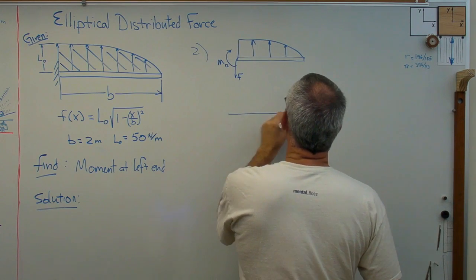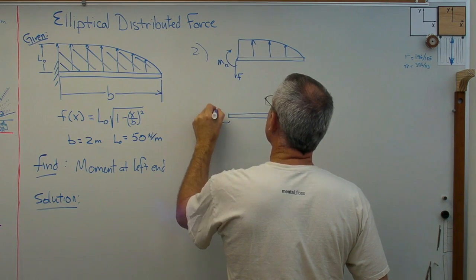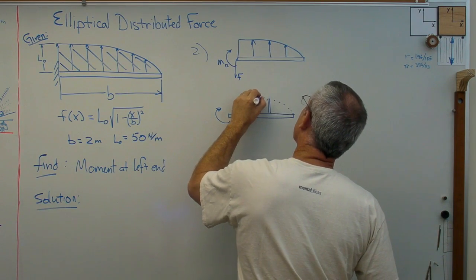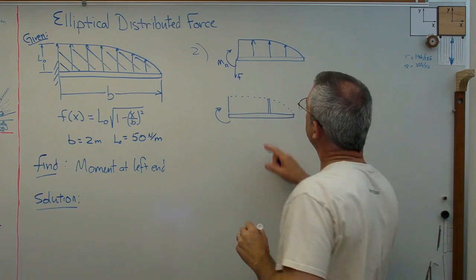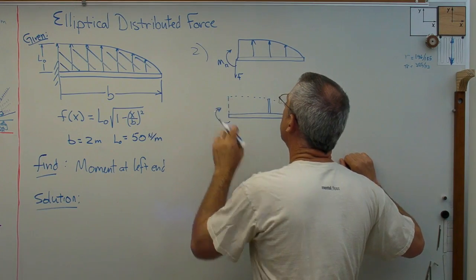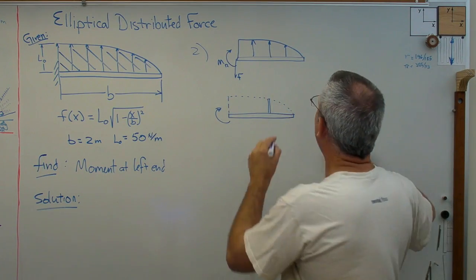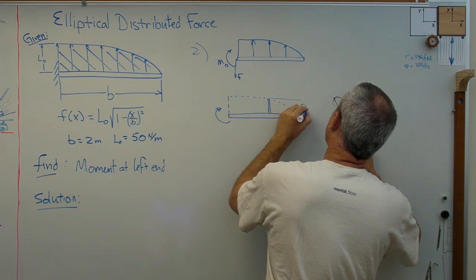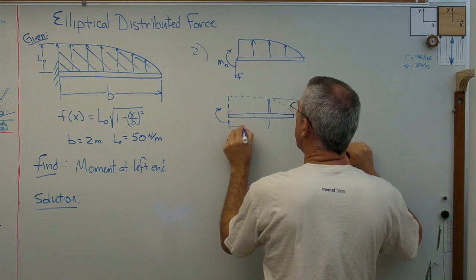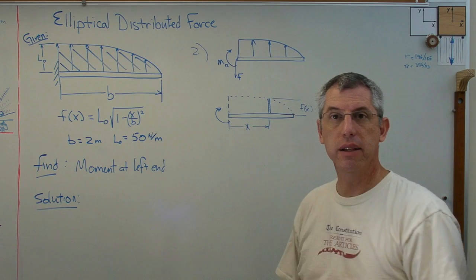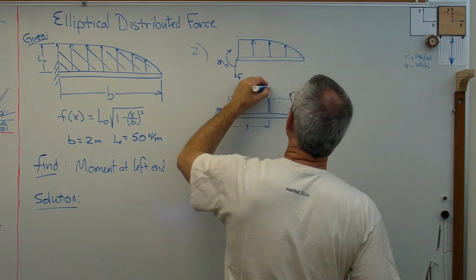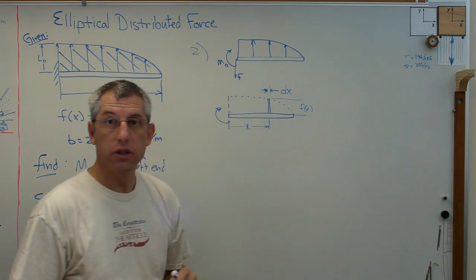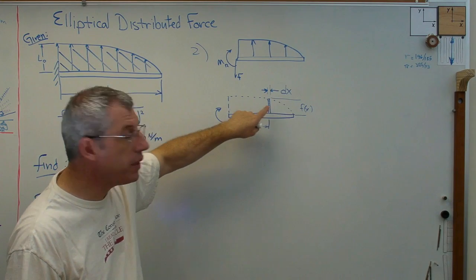Well, if I want to figure out the moment due to a little one segment out of this, what I could do is this. That little bit right there, that's part of the area under the curve. Its height is f of x and I don't know where that point is so I'll just call it x. The height of that little tiny box is f of x. What's its width? Well, that's dx.